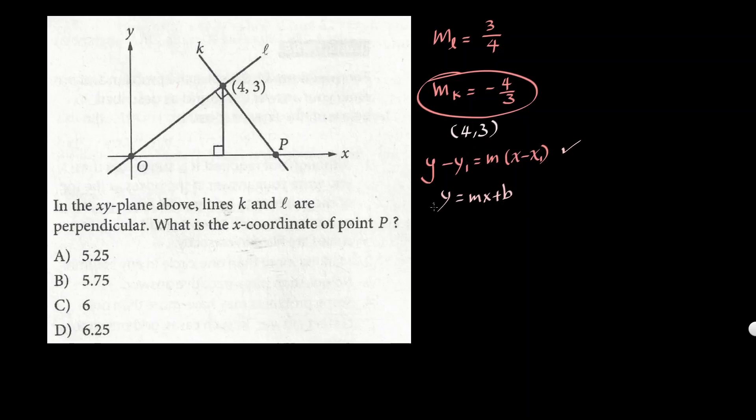So we write y - y₁, which is the y-value of the point: y - 3 equals the slope for line K, which is -4/3, times (x - x₁): x - 4. Now that's the equation for line K.